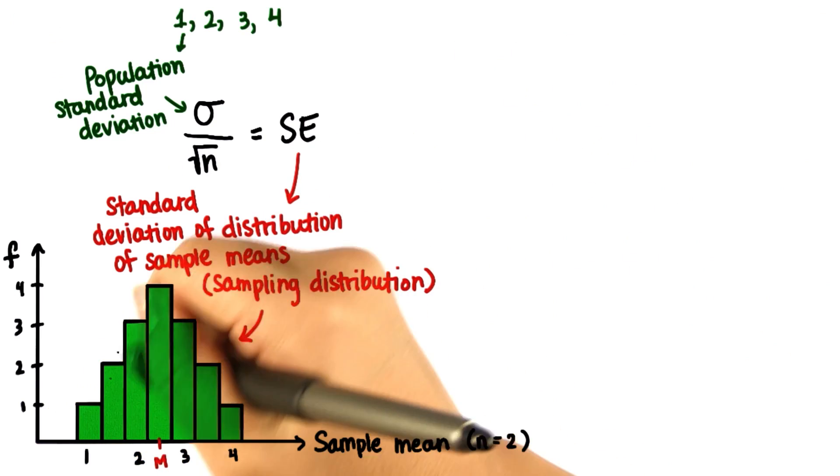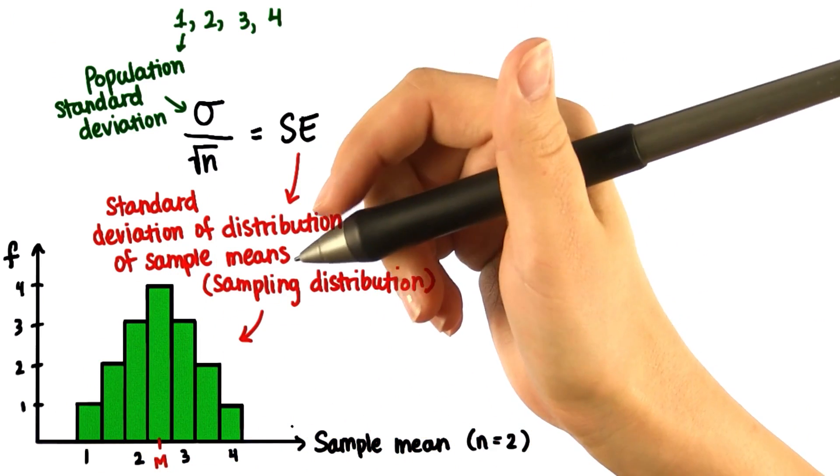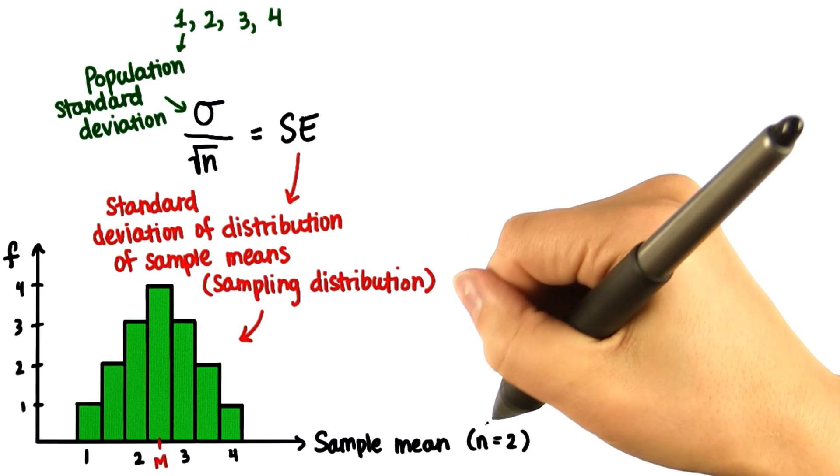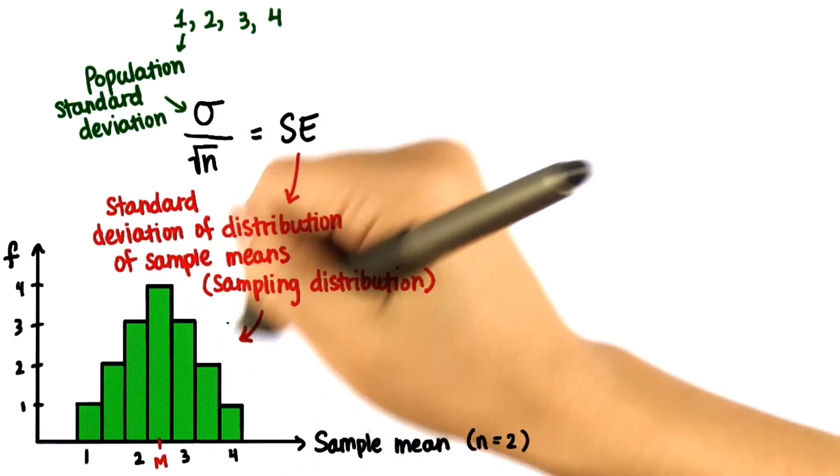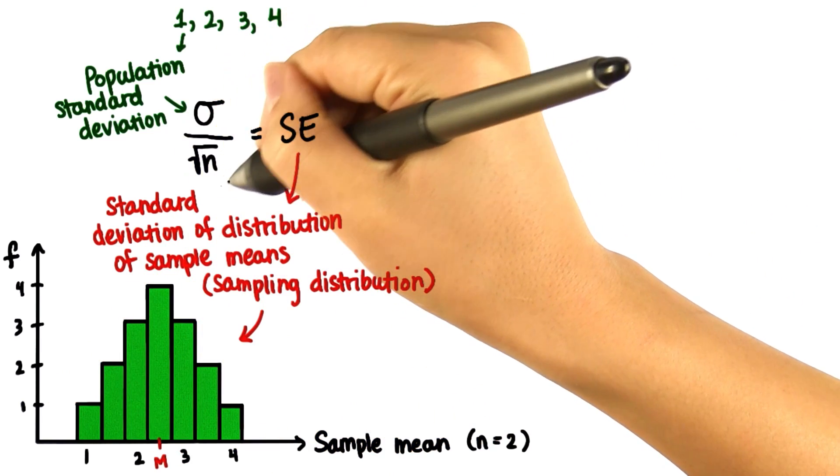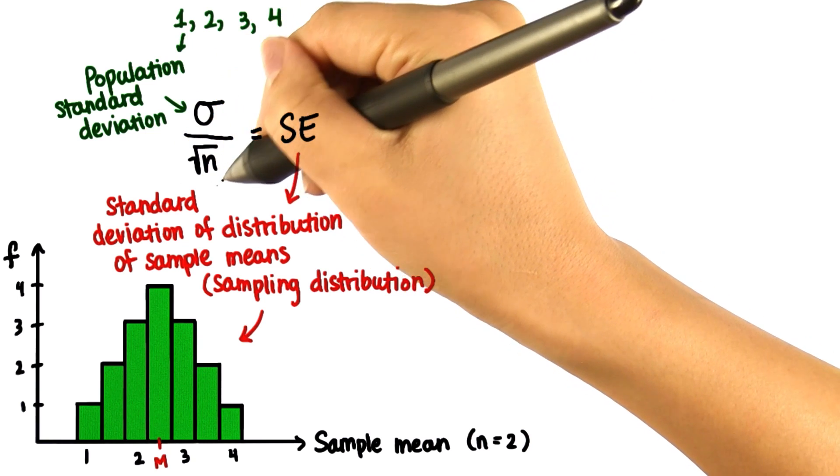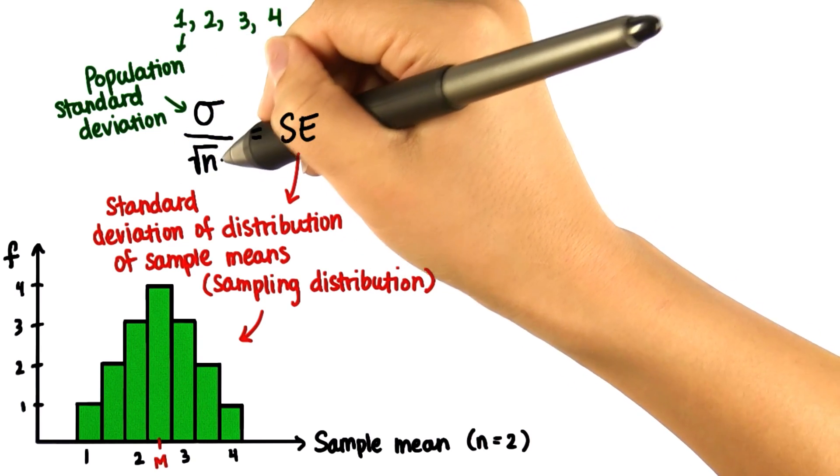Because now we know that the distribution of means, where every mean is the mean of a sample of size n, this distribution has a standard deviation equal to the population standard deviation divided by the square root of n.